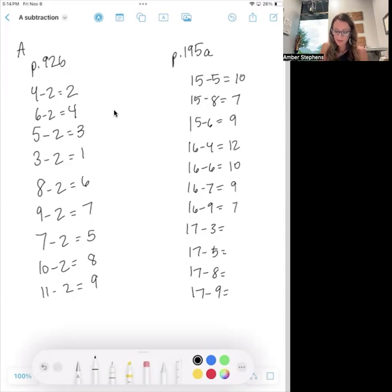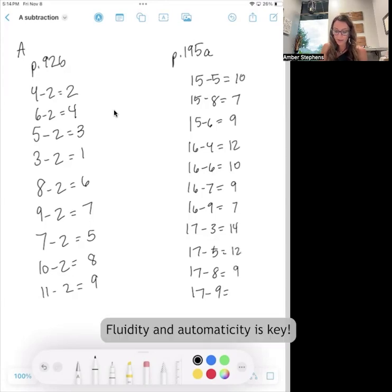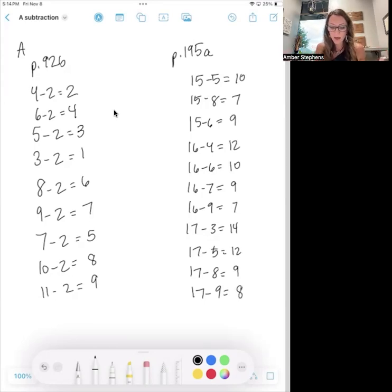So fluidity and automaticity are the goals in this level, and that is how we subtract at Kumon.